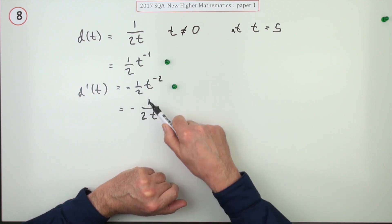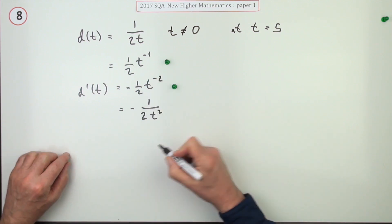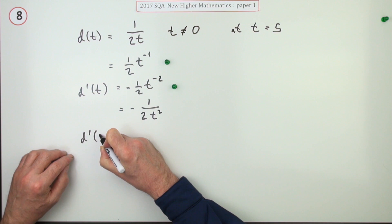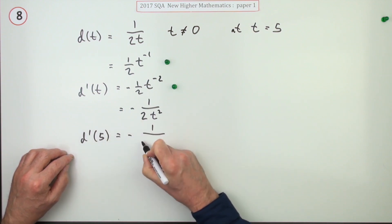T to the negative two means one over t squared. So if I want to evaluate that at five, it's going to be negative one over two times - replace the t with a five.